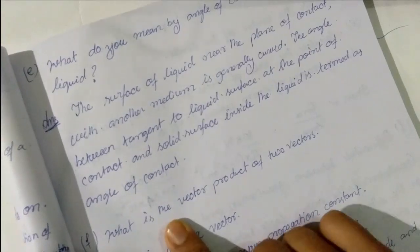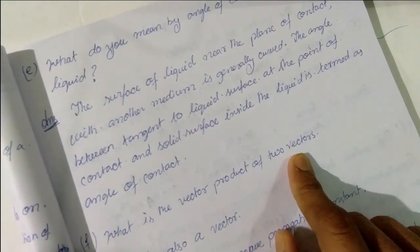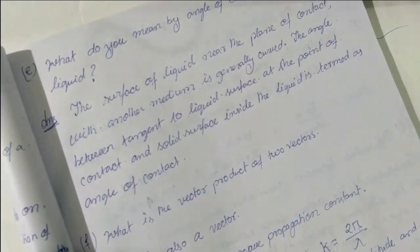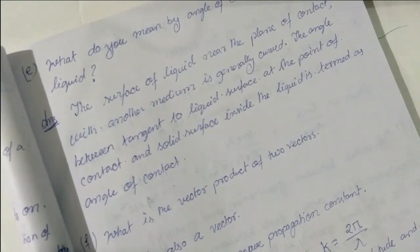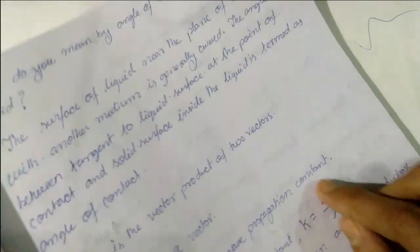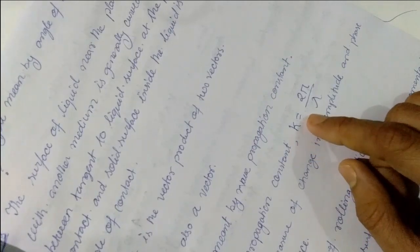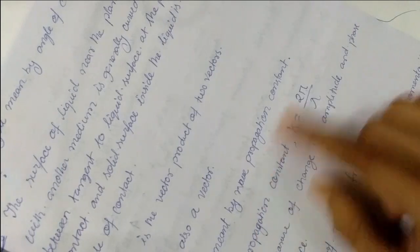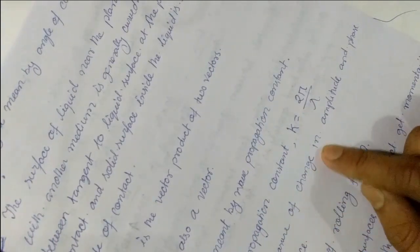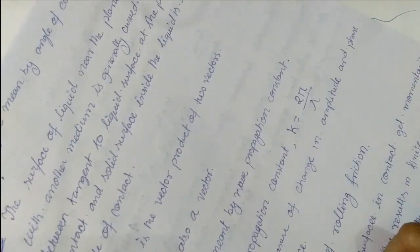Next question: What is the vector product of two vectors? The vector product of two vectors is also a vector. Next question: What is meant by the propagation constant? The wave propagation constant K is given as 2π/λ, where the wave propagation constant is the measure of the change in amplitude and phase per unit distance.